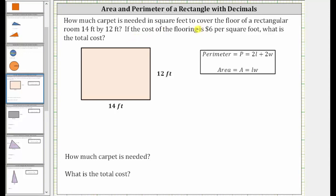How much carpet is needed in square feet to cover the floor of a rectangular room 14 feet by 12 feet? If the cost of the flooring is $6 per square foot, what is the total cost?